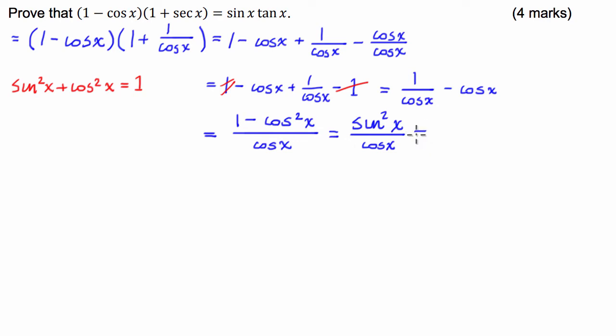And from here what I'm going to do is I'm just going to break that sine squared x down to sine x times sine x divided by cos x. Now from here we can see that sine x over cos x, well that's equal to tan of x. So we can just rewrite this as equal to sine of x tan of x. And that is equal to the right hand side.